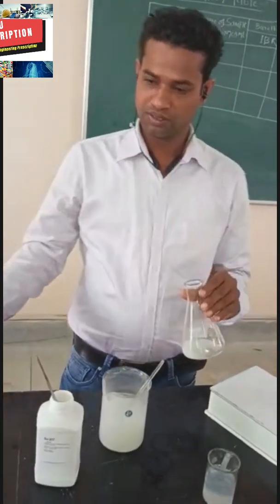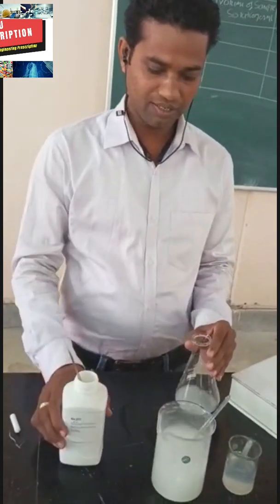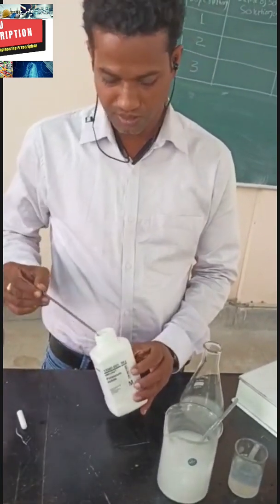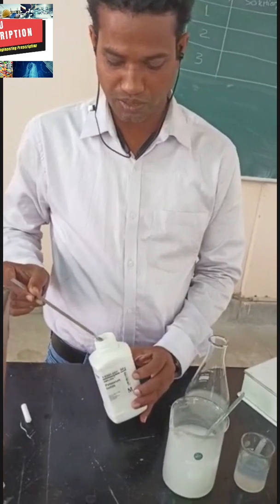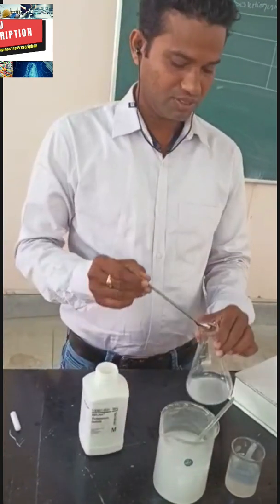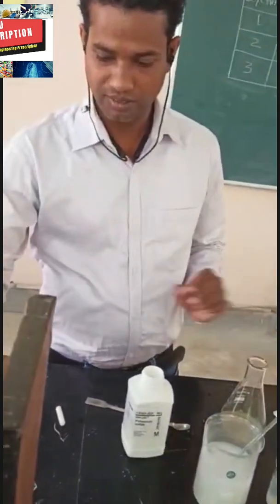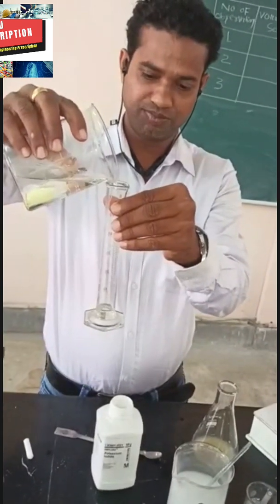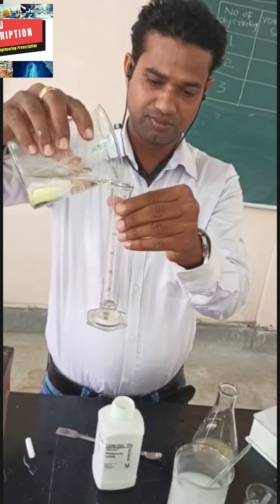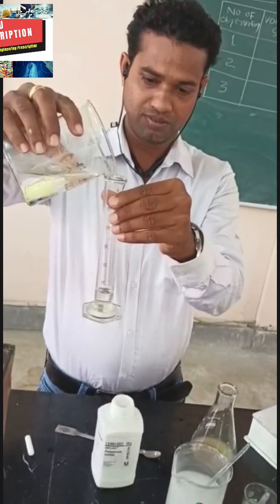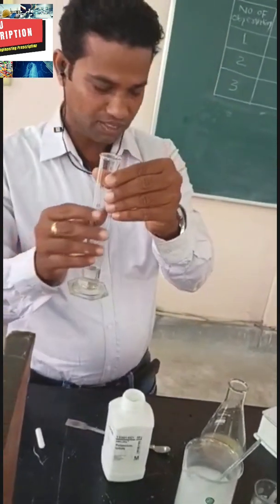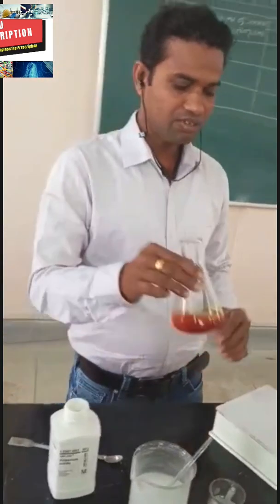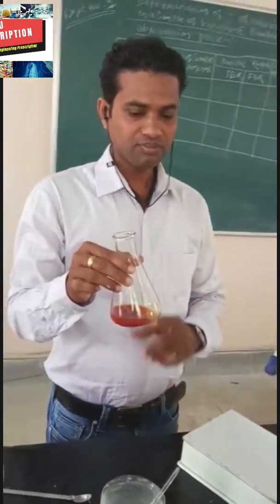We add 1 gram solid potassium iodide and 10 ml glacial acetic acid. This is potassium iodide. Now we add approximately 1 gram solid potassium iodide, and then measure 10 ml of acetic acid. Now it is 10 ml — add to the conical flask. Now here iodine is liberated.